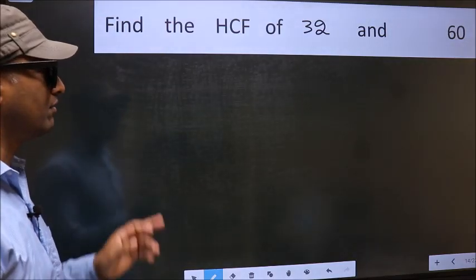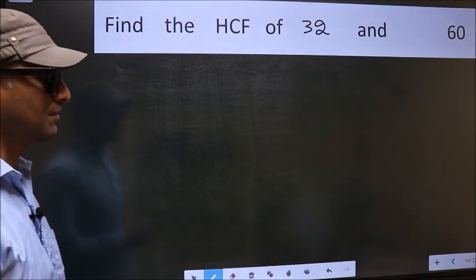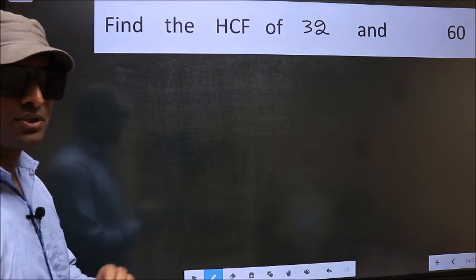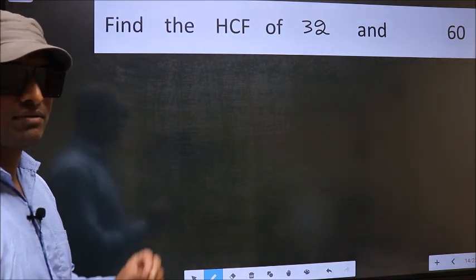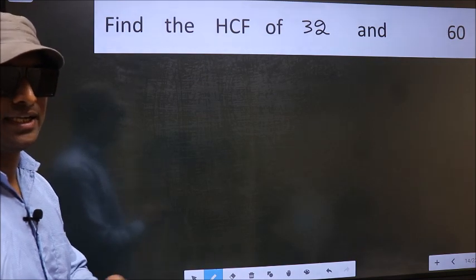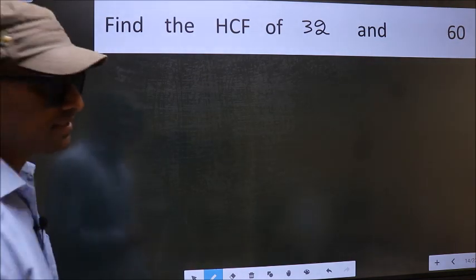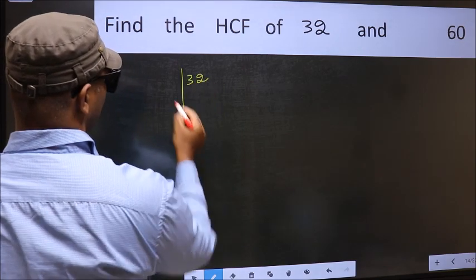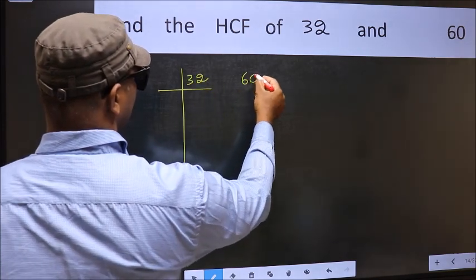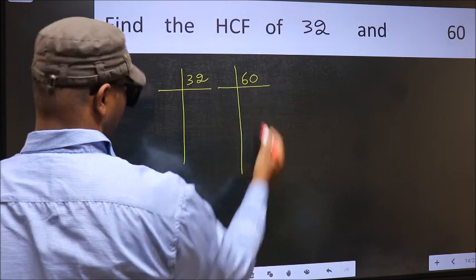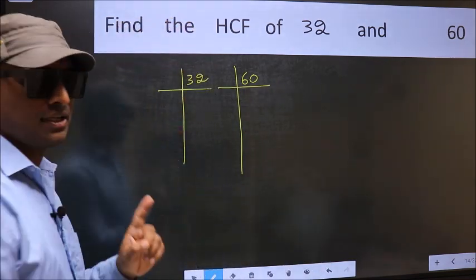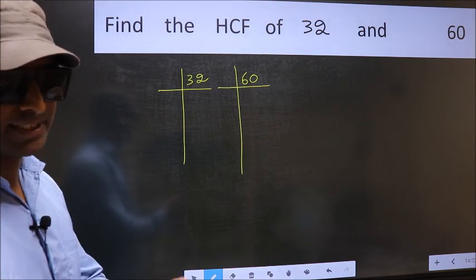Find the HCF of 32 and 60. To find the HCF, we should do the prime factorization of each number separately. What I mean is 32 and 60. This is your step 1.